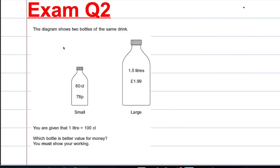Exam question 2. Two diagrams show bottles of the same drink. You are given 1 litre is 100 centilitres. So 60cl costs 78p and 1.5 litres costs £1.99. Let's convert everything so it's in the same unit. 1 litre is 100 centilitres. So 1.5 litres must be 150 centilitres and £1.99 is 199p.